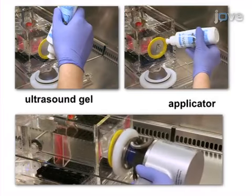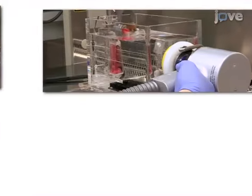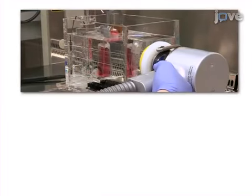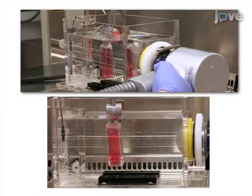Next, the applicator is placed against the water bath's membrane in a horizontal manner. The final step is to ensure that the shockwave source is in line with the center of the cell culture flask in order to have the cells positioned within the wave focus.